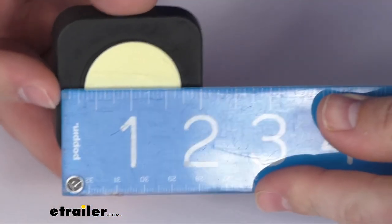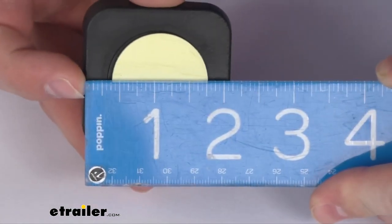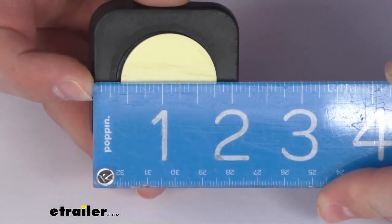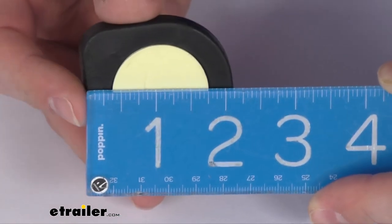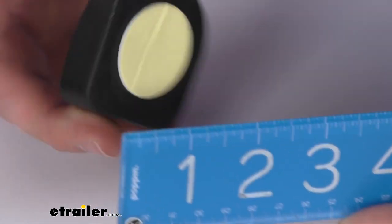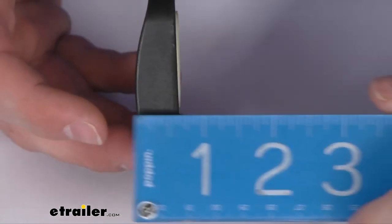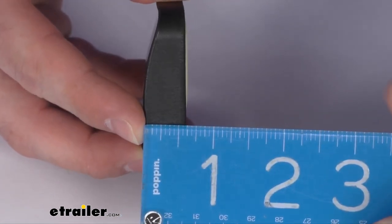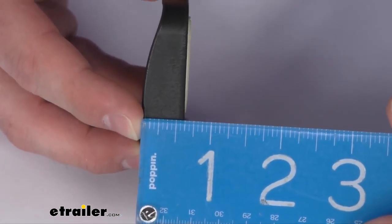Our dimensions for this, we're looking at approximately 2 1⁄8 of an inch wide by 2 1⁄8 of an inch tall, and then at our deepest point there, we're looking at about 5 1⁄8 of an inch thick.